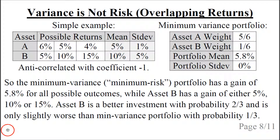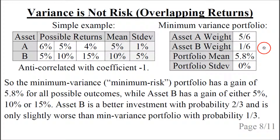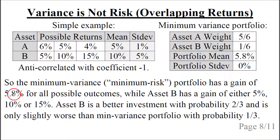What if the two assets have overlapping returns? We keep the same returns for asset B, but now asset A has returns of 6%, 5%, or 4%, with a mean of 5%. The minimum variance portfolio still has asset A weight 5/6 and asset B weight 1/6. The portfolio mean is 5.8% with a standard deviation of 0. However, asset B has a gain of either 5%, 10%, or 15%. If the outcome is 10% or 15%, it is clearly better than the minimum variance portfolio's 5.8%. Only when asset B returns 5% is the return slightly lower than the portfolio's 5.8%. So asset B is still clearly a better investment.